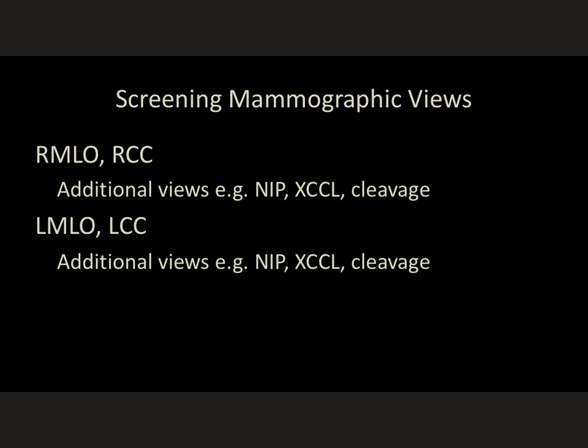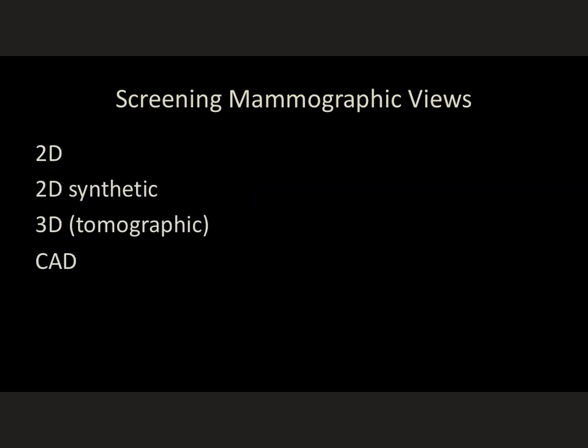A standard screening mammogram includes right MLO and right CC views, left MLO and left CC views. And then there may be additional views of either breast, such as nipple in profile, extended CCL views, or cleavage views in order to obtain the entire breast. Screening mammograms include some combination of 2D images and 3D tomographic images, which are now widely available at most institutions. The 2D images may be digitally acquired or they may be synthetic, or you may have both — and I'm going to show you a workflow system that has both.